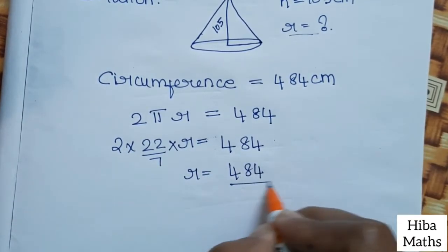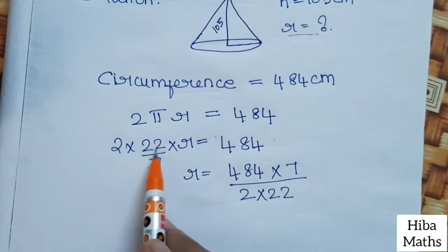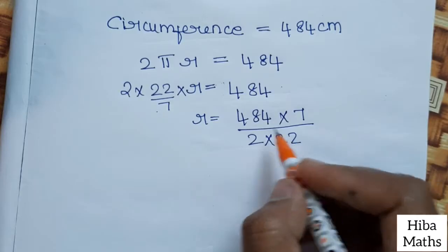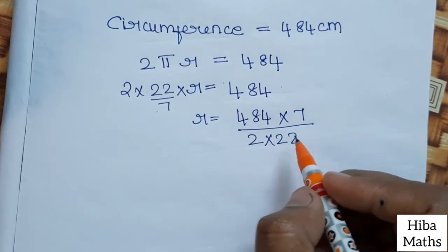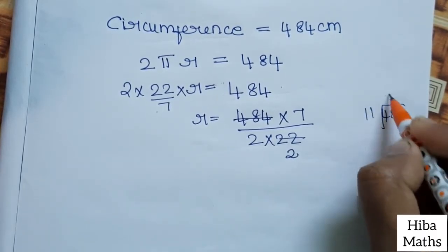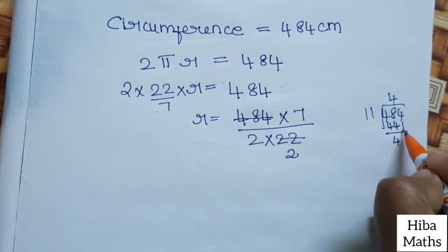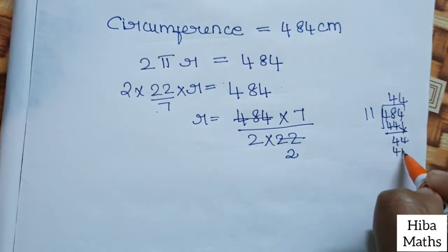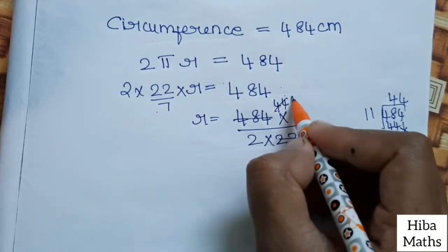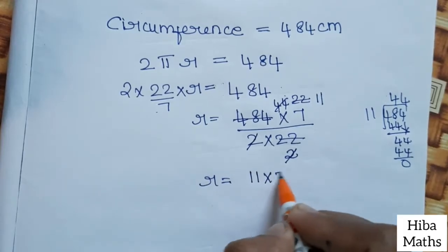The denominator is 2 × 22 divided by 7. Simplifying, we get r = 77 cm.